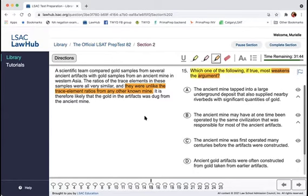It is therefore likely that the gold in the artifacts was dug from the ancient mine. Okay, interesting. So the samples match up, and the trace elements match up. They're very similar, and this part is interesting. They're unlike the trace element ratios from any other known mine. Now, it's possible that there are other mines that are unknown that we're not aware of. Maybe the gold wasn't mined. That's also possible.